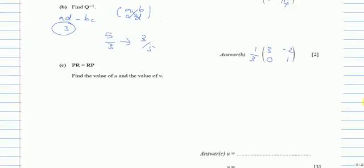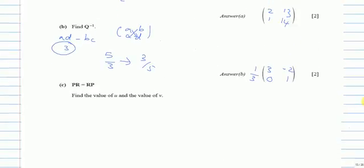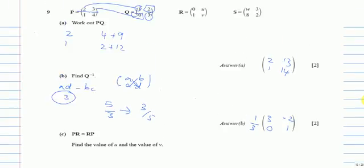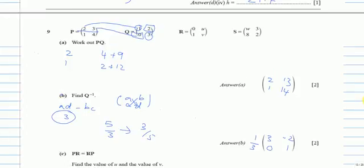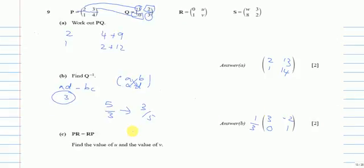Part C. PR is equals to RP. Find the value of V and find the value of U. So again, we will multiply the row into the column of PR and then RP. So let me just write it again: 2, 1, 3, 4 and 0, U, 1, V.